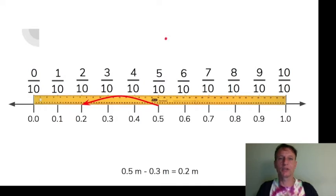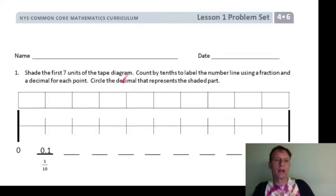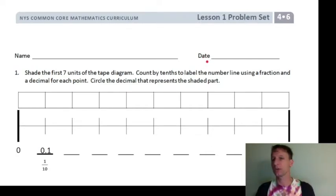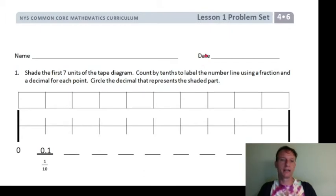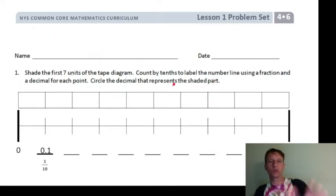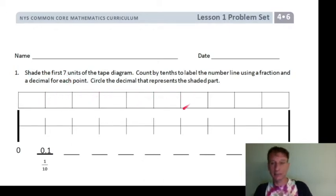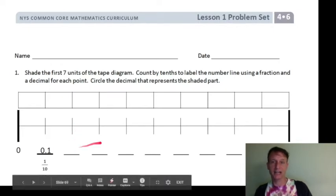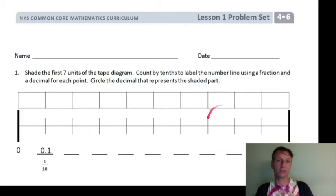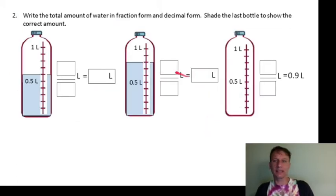Now let's flow through the problem set together. Don't forget to write your name and date first. What you're doing here is what we did with the tape diagram: shade the first seven units, label the whole number line with decimal form on top and fractional form on bottom, and circle the one that represents the shaded part — they already told you it's the first seven units.